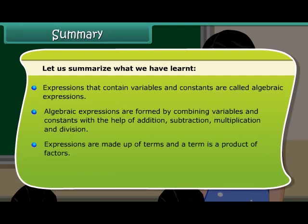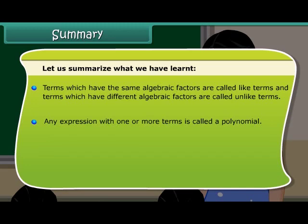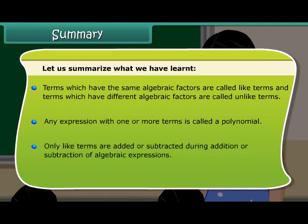Expressions are made up of terms and a term is a product of factors. The coefficient is the numerical factor in the term. Terms which have the same algebraic factors are called like terms and terms which have different algebraic factors are called unlike terms. Any expression with one or more terms is called a polynomial. Only like terms are added or subtracted during addition or subtraction of algebraic expressions.